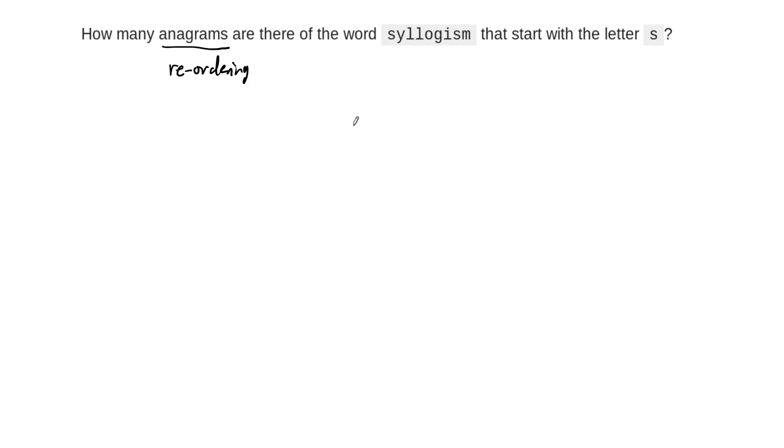So the first thing, I like geometry so I'm going to draw this out so we have a visual here. But the first thing we have to do is fix the first letter as S. In other words, that first letter has to be S, we don't have a choice for anything else. And once we do that, there's going to be 8 more spots that we have to fill in to make our reordering or anagram of this word syllogism.